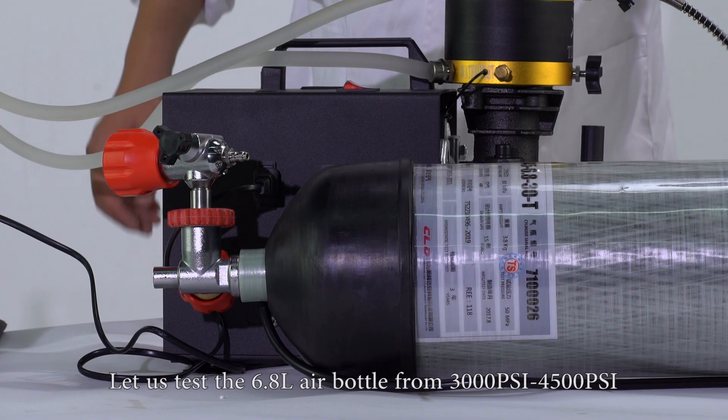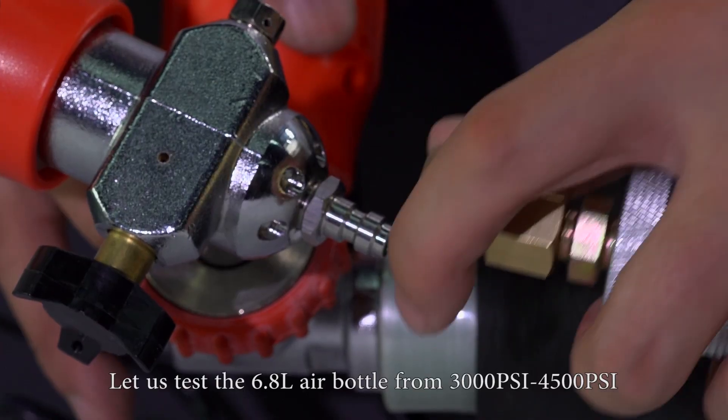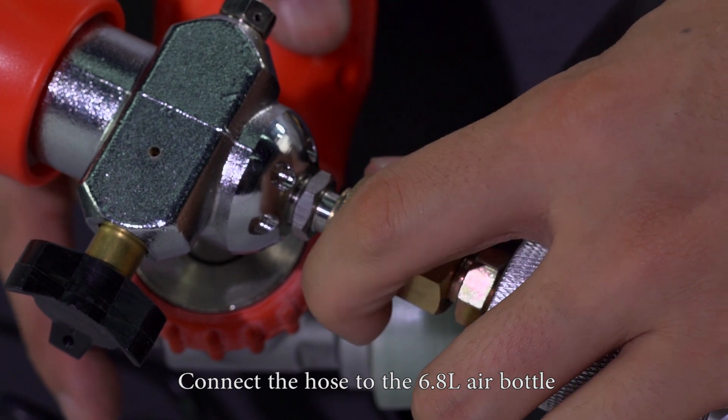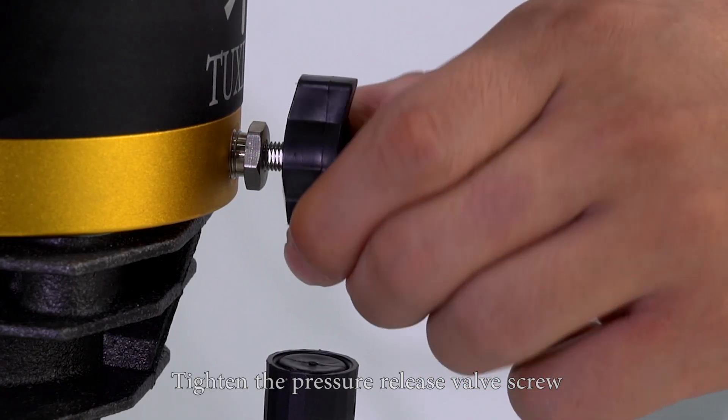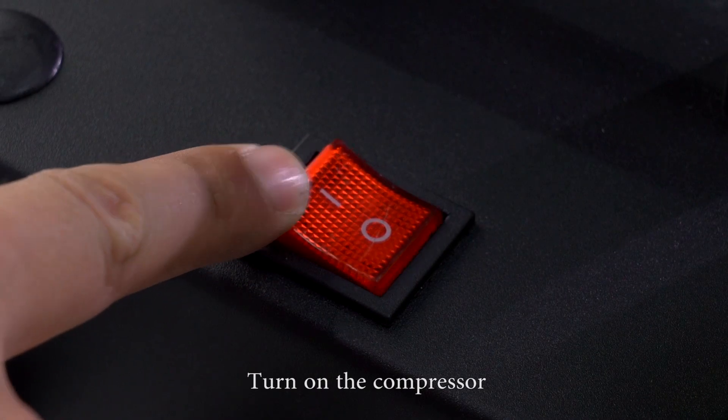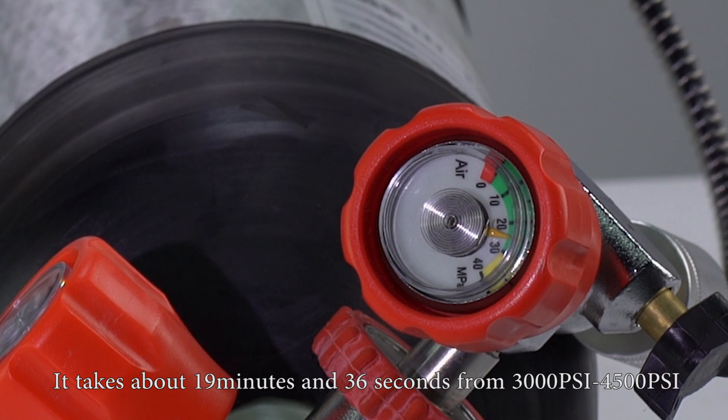Let us test the 6.8 liter air bottle from 3000 psi to 4500 psi. Connect the hose to the 6.8 liter air bottle. Tighten the pressure release valve screw. Tighten the drain valve screw. Turn on the compressor. It takes about 90 minutes and 36 seconds from 3000 psi to 4500 psi.